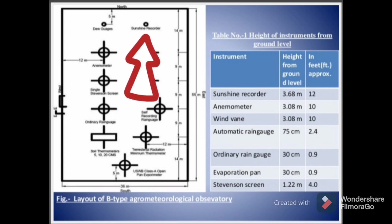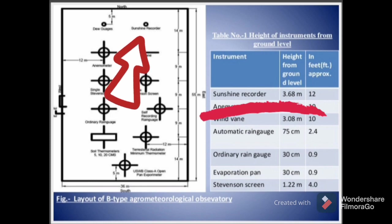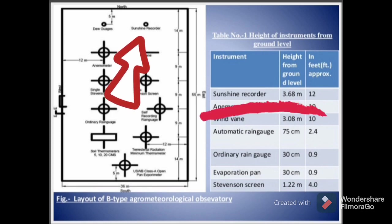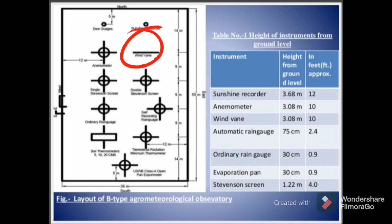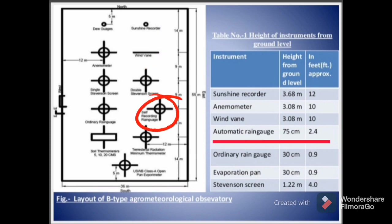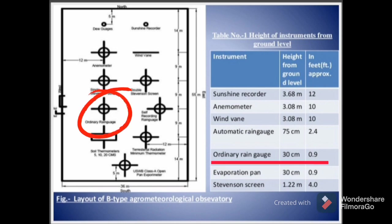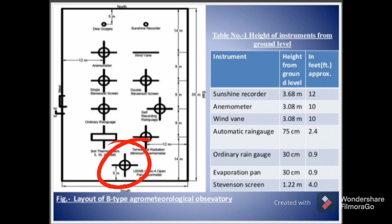The sunshine recorder is placed at 3.68 meters height from ground level, or approximately 12 feet. The anemometer is at 3.8 meters height, or approximately 10 feet. The wind vane is placed at 3.8 meters, or approximately 10 feet. The automatic rain gauge is at 75 cm, or 2.4 feet. The ordinary rain gauge is at 30 cm height, or 0.9 feet. The evaporation pan is at 30 cm height, or 0.9 feet.